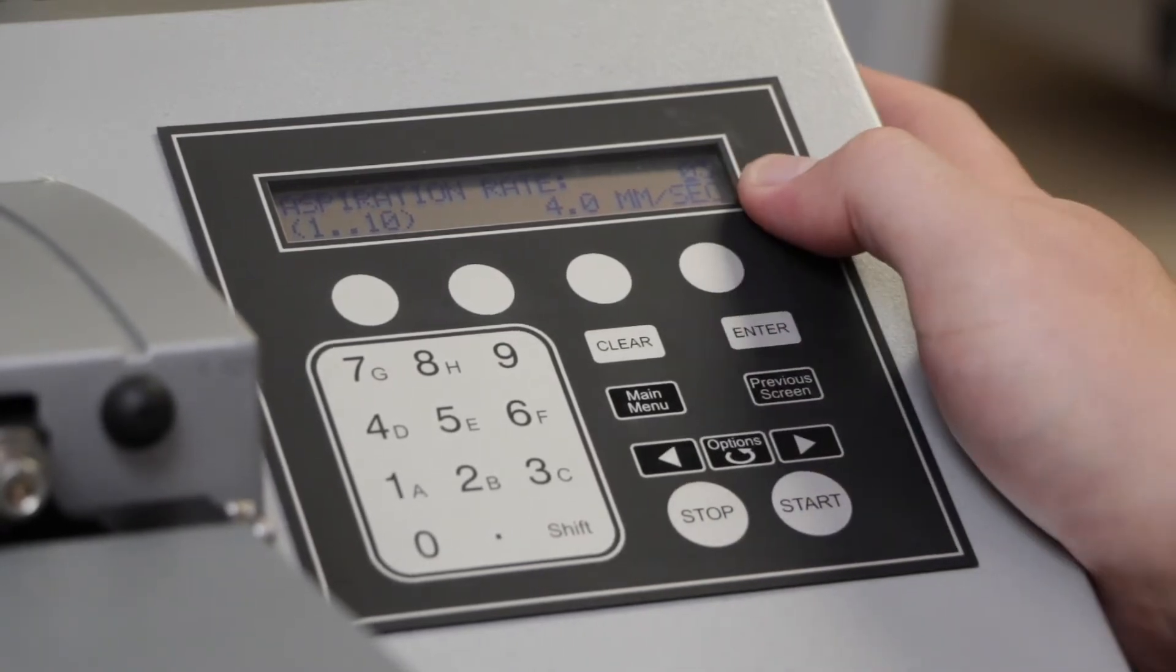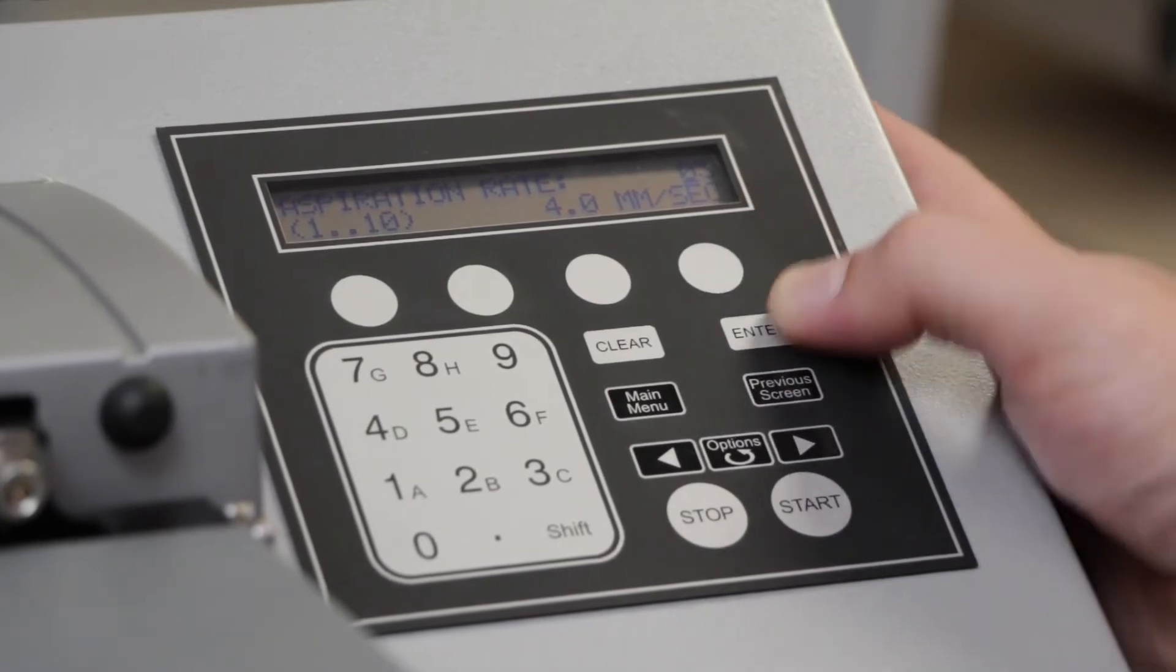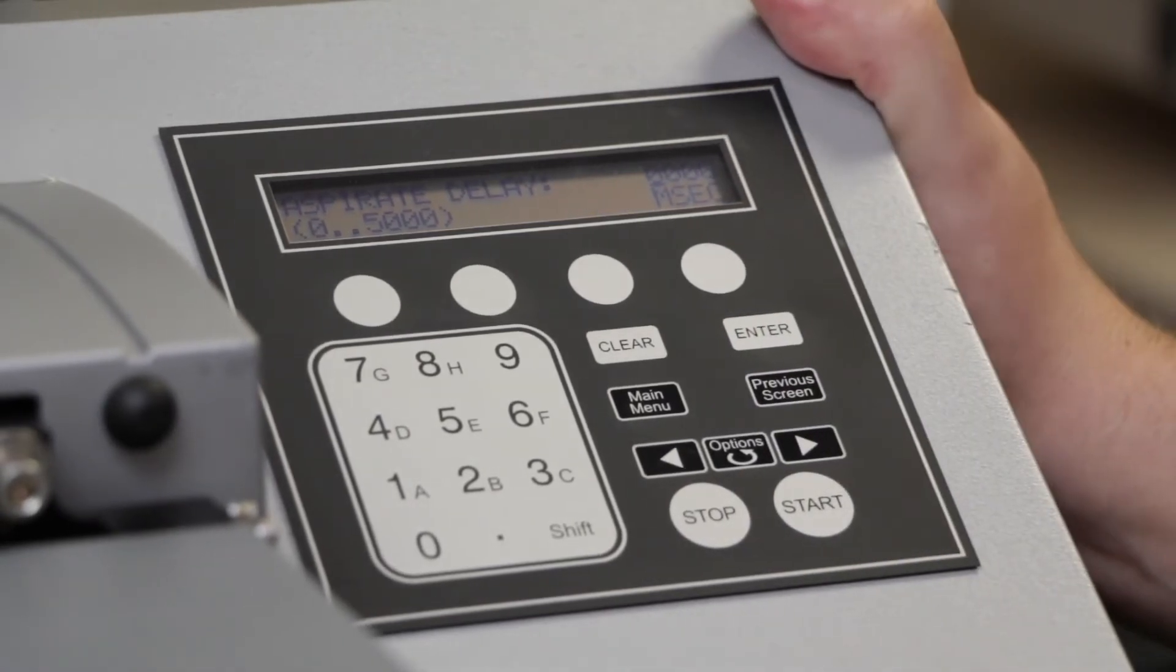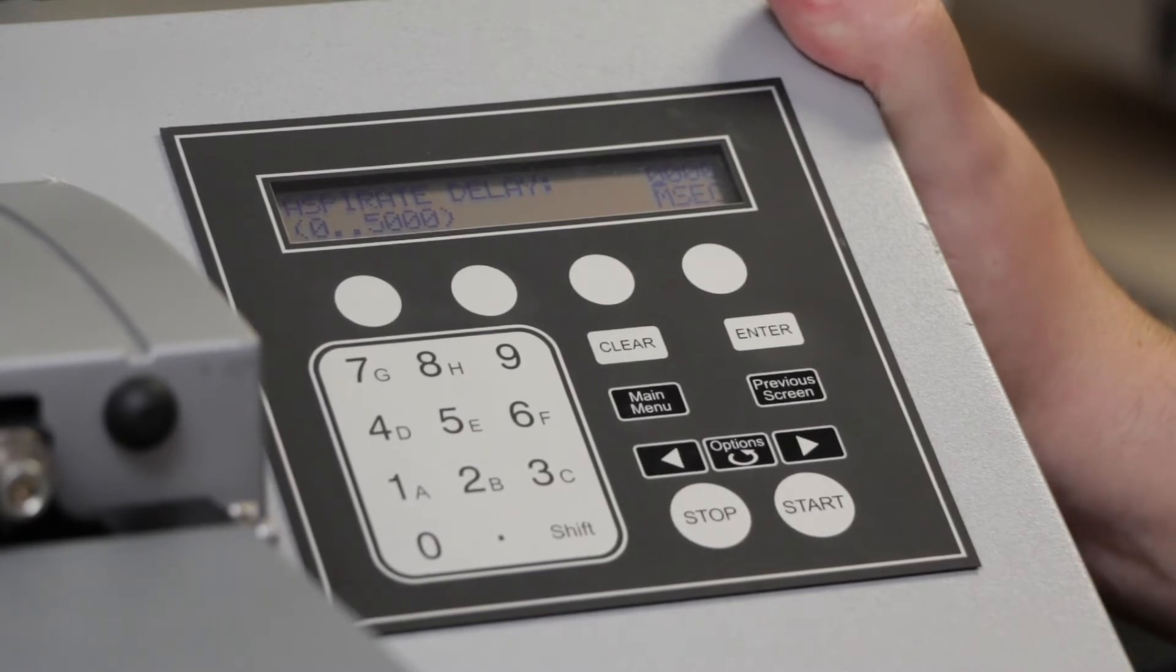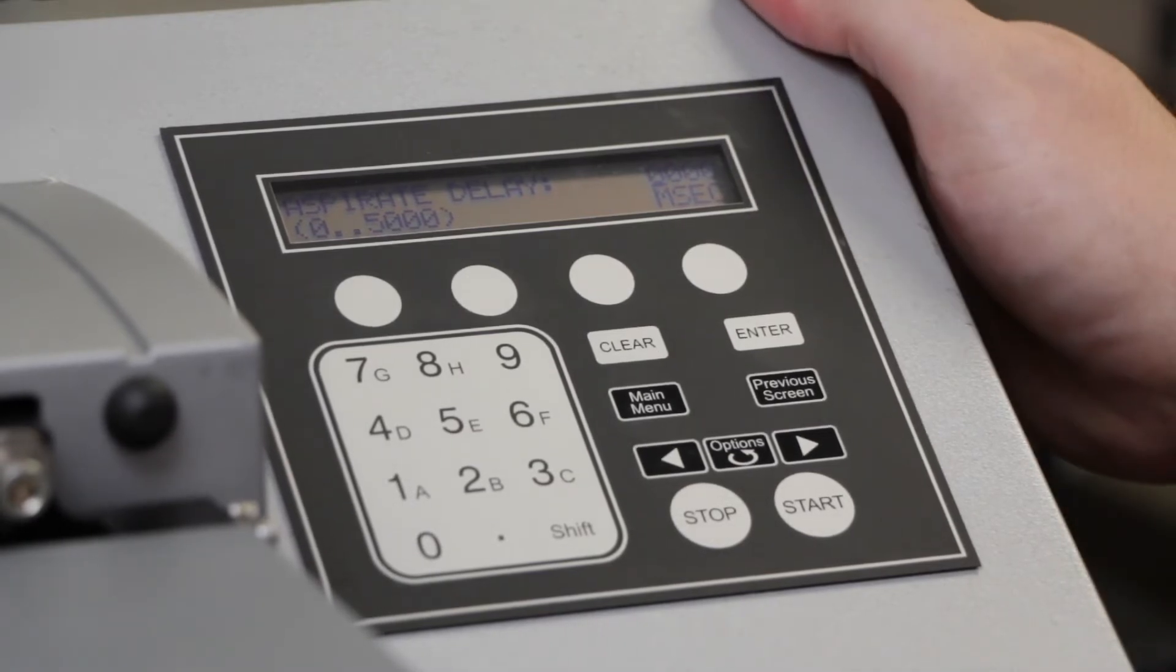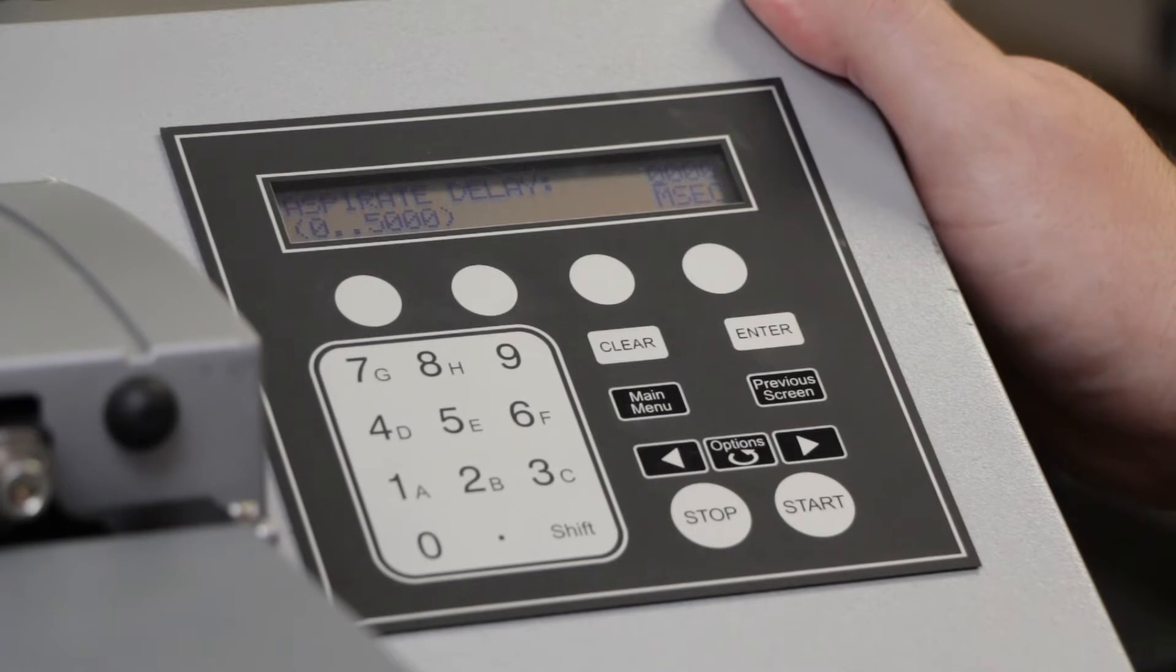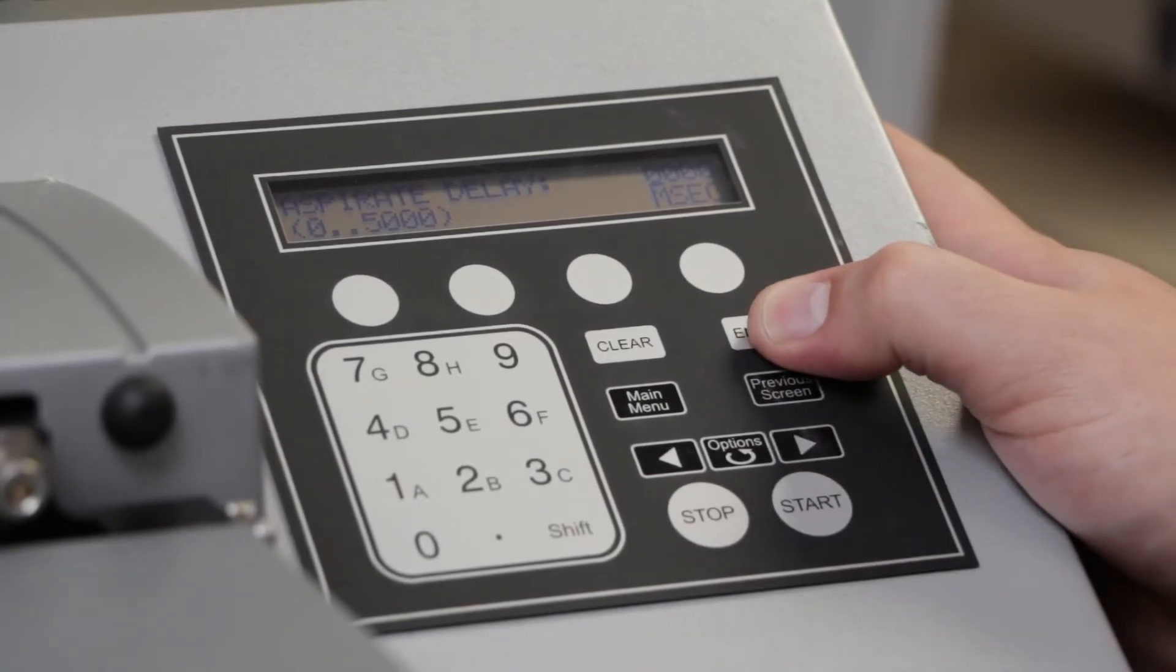These options range from 1 to 10. Aspirate delay is useful if you want to build up a good vacuum pressure prior to or allow a pseudo-soak before aspirating. We won't use that in our protocol.